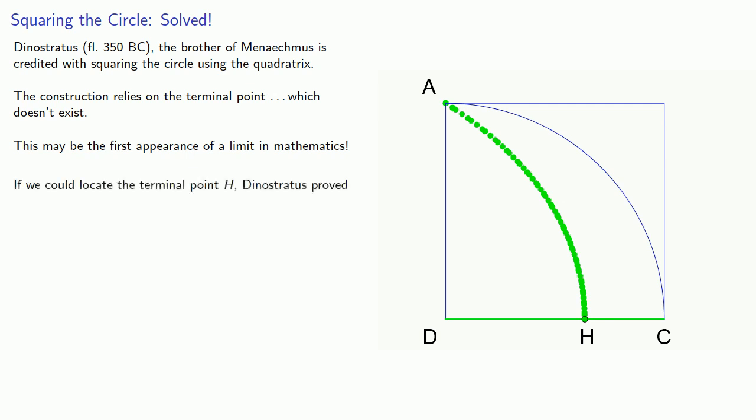Now if we could locate the terminal point H, Dinostratus proved that the length of the arc AC is to the radius AD, as the radius AD is to the length DH. We'll ignore one potential problem. Isn't that a ratio between a straight line and a curved line? Don't say anything!